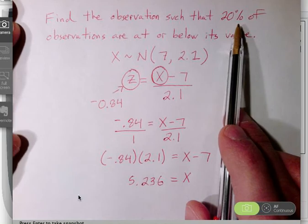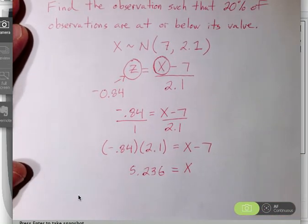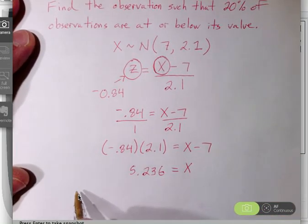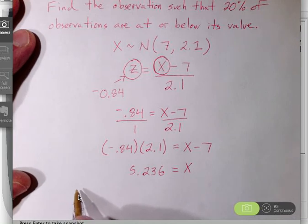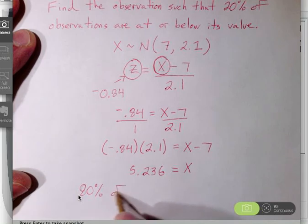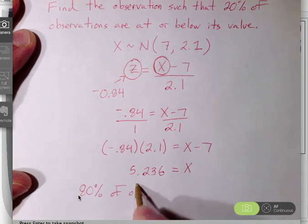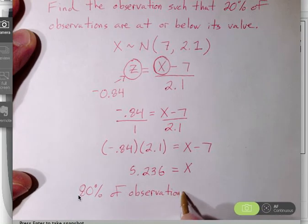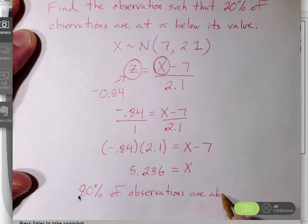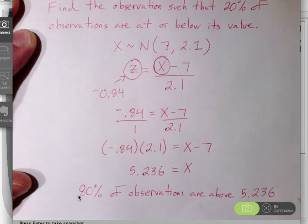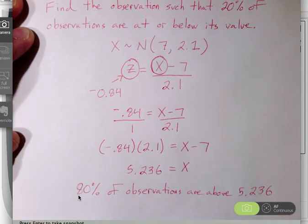Understand this also represents something to think about. This also represents the observation where 80% of observations are above this value of 5.236 in our specific normal distribution.